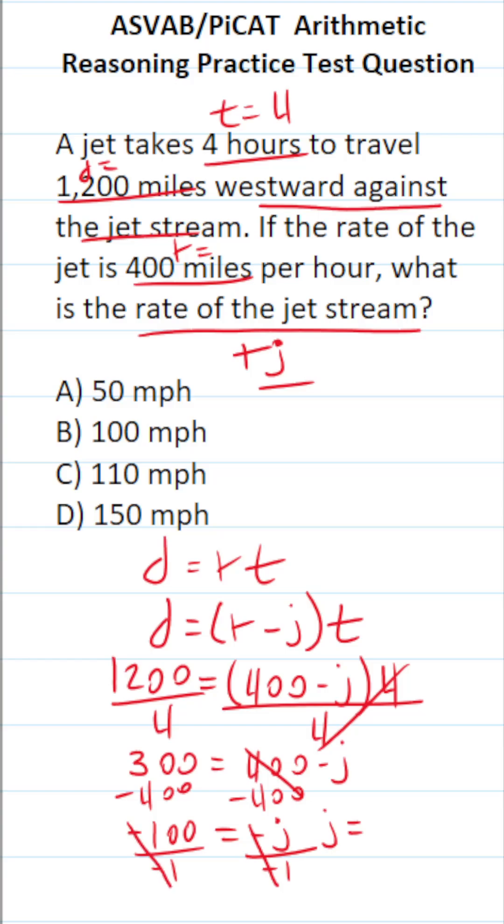A negative divided by a negative becomes a positive. Negative 100 divided by negative one is positive 100.